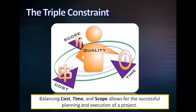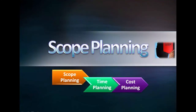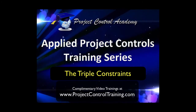At the end of the day, these are the key elements of a successful project which determine whether or not you have effectively managed a project. To end up with a successful project, you need to have a good plan in place — a plan that consists of the three major elements of scope, time, and cost. Let's start the planning process with scope planning.